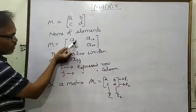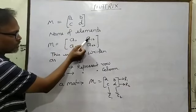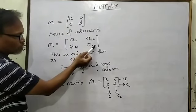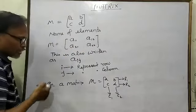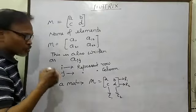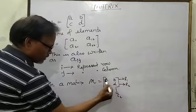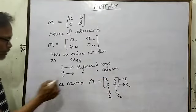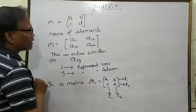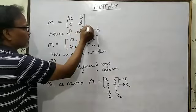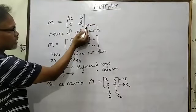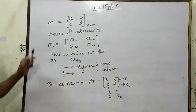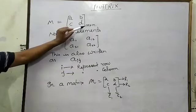So a11 means first row, first column. This element belongs to the first row, first column. a12 belongs to the first row, second column; a21 to the second row, first column; and a22 to the second row, second column. When we write elements in the form of a matrix, they are represented in rows and columns. The horizontal represents the row and the vertical represents the column. The order of the matrix is written as m cross n, where m represents the number of rows and n represents the number of columns. So the order of this matrix is 2 cross 2.